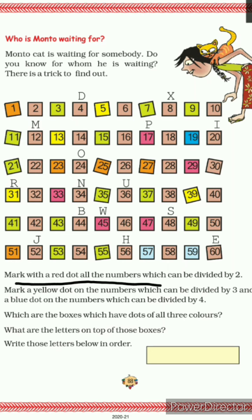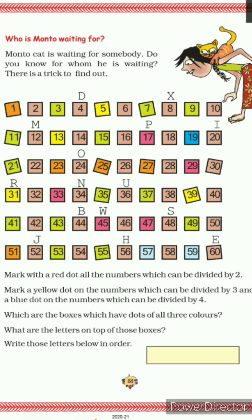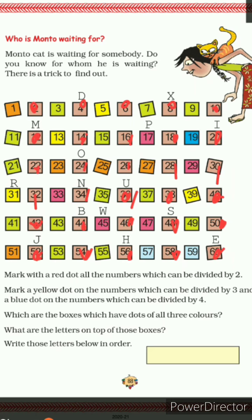Mark with a red dot all the numbers which can be divided by 2. So mark 2, 4, 6, 8, 10, 12, 14, 16, 18, 20, 22, 24, 26, 28, 30, 32, 34, 36, 38, 40, 42, 44, 46, 48, 50, 52, 54, 56, 58, and 60 with a red dot. We have colored all these with red.